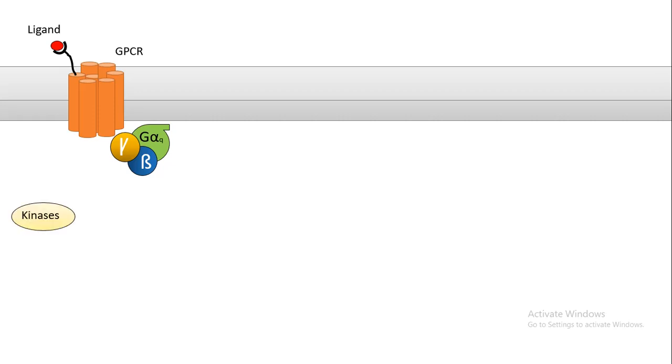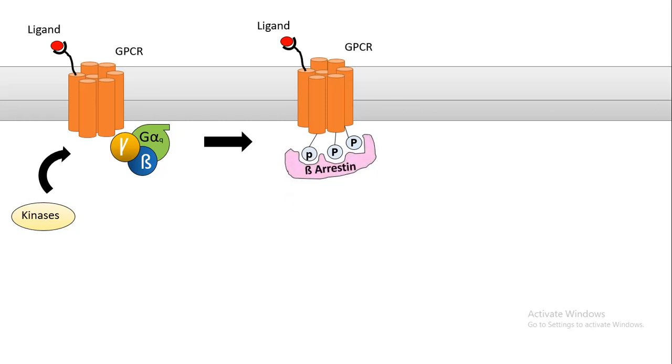The phosphorylated GPCR is actually a binding site for beta-arrestin. Beta-arrestin can in turn interact with adapter proteins like AP2, which bring in clathrin coat assembly.